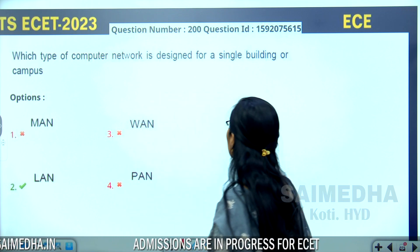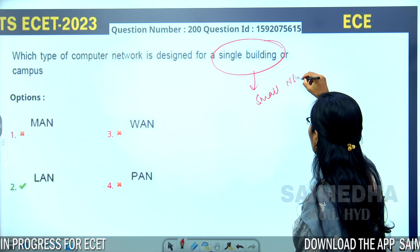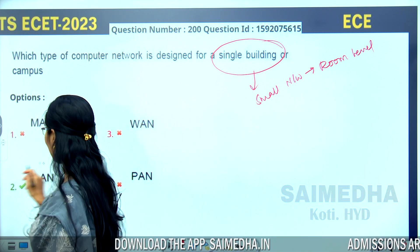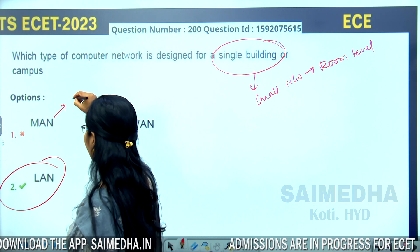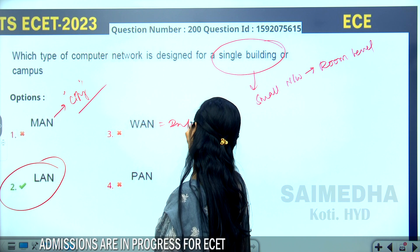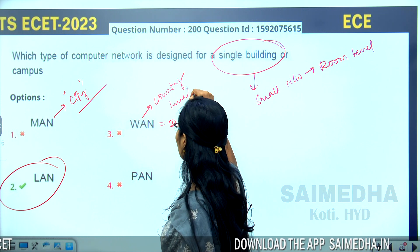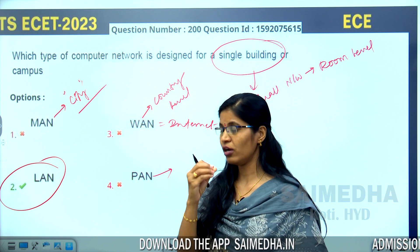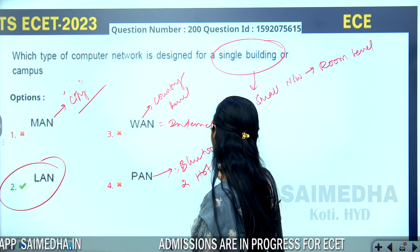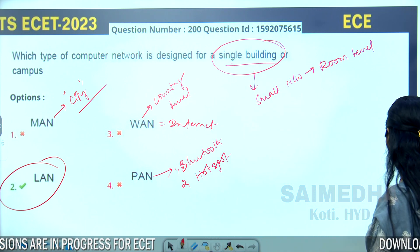Which type of computer network is designed for a single building? A single building means a small network — a room-level network — which is a Local Area Network (LAN). Metropolitan Area Network (MAN) covers an entire city. Wide Area Network (WAN) is equivalent to the internet and covers an entire country. Personal Area Network (PAN) connects two or three devices, with examples being Bluetooth and hotspot. So the answer is LAN.